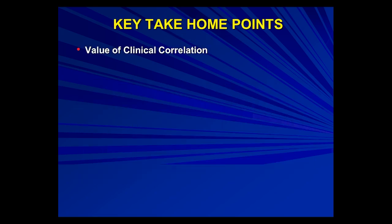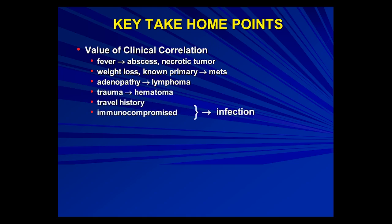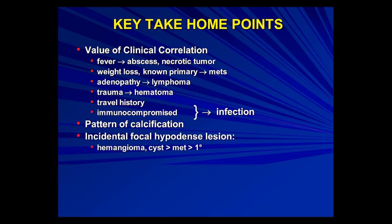The take-home points are really the value of clinical correlation. If you have fever, think about abscess and maybe necrotic tumor. If you have weight loss or a known primary, think about metastatic disease. Adenopathy should make you think about lymphoma. Trauma history — think hematoma. Immunocompromised patients — think about infection. Calcifications point toward granulomatous disease, Gamma-Gandi bodies in patients with portal hypertension, and several tumors or infections that can calcify, as well as sickle cell disease.